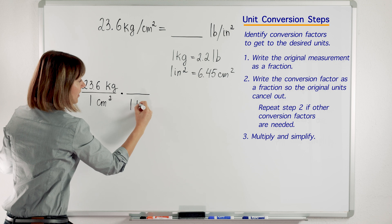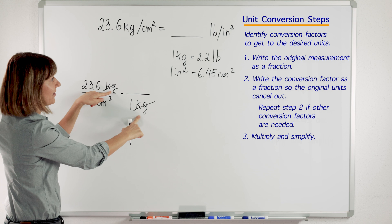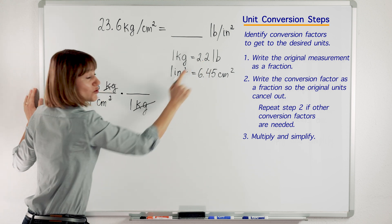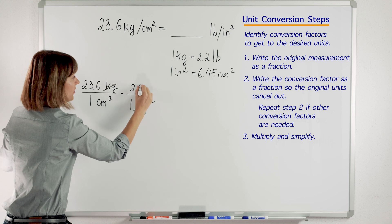I will put it in the denominator to cancel my original units. And then I will put 2.2 pounds on top in the numerator, 2.2 pounds.